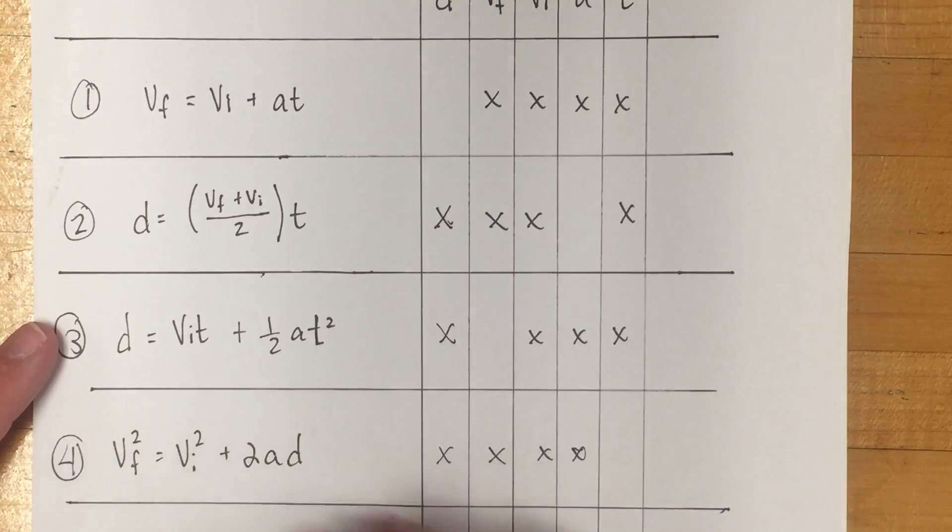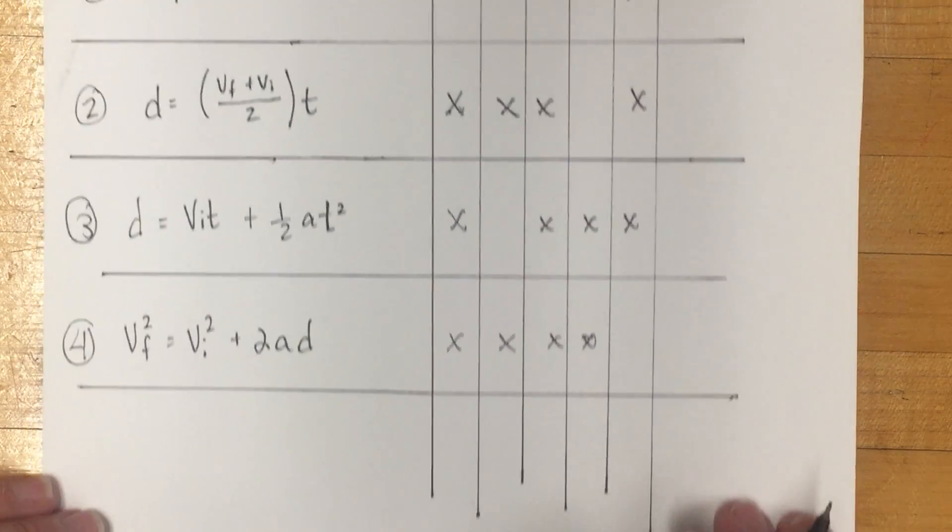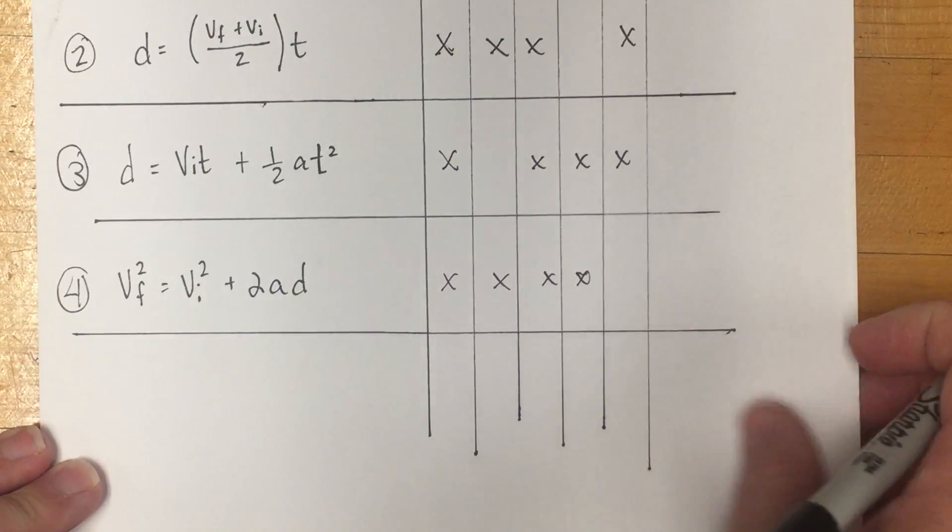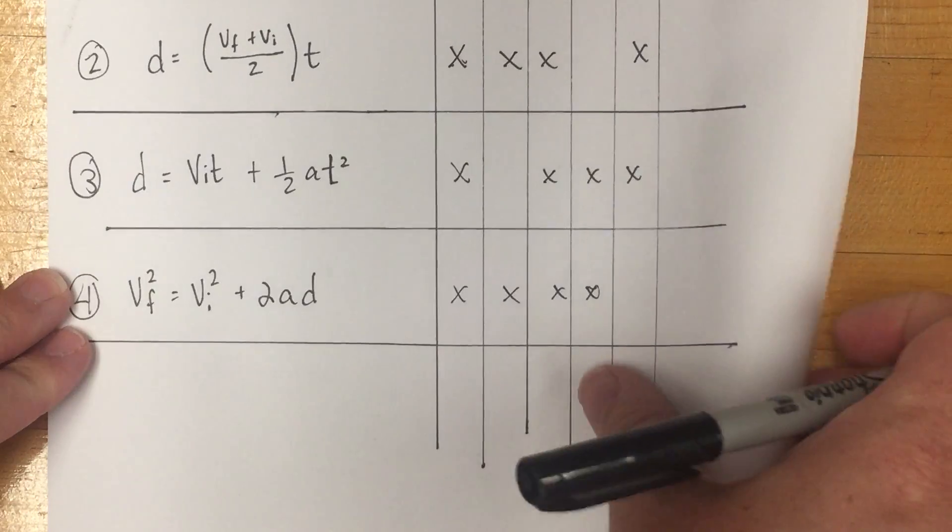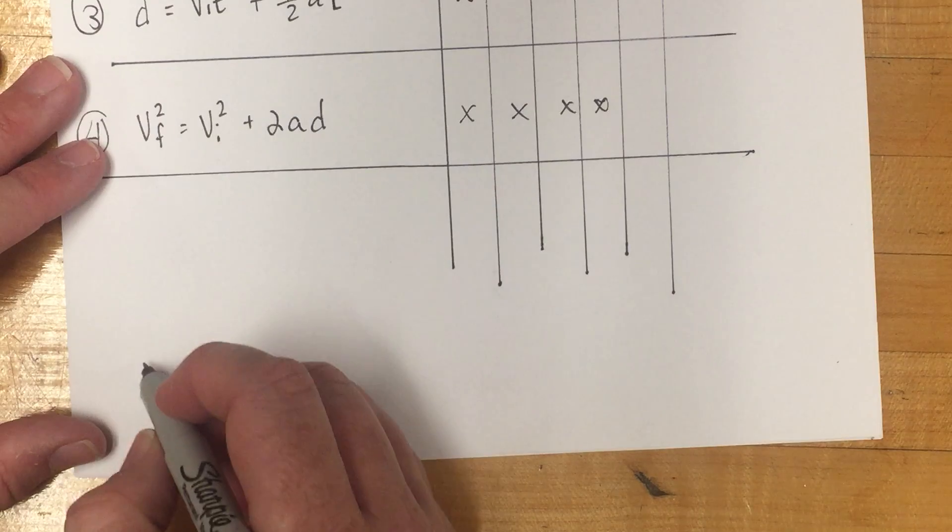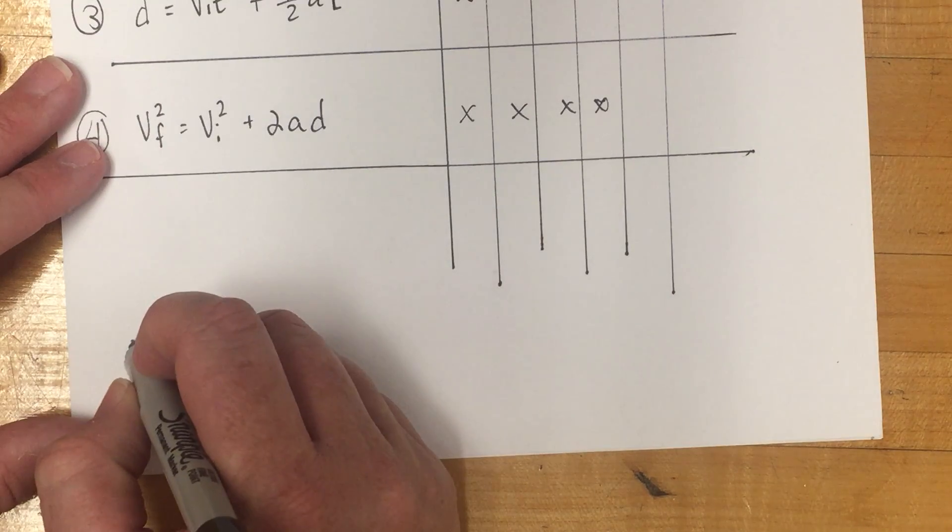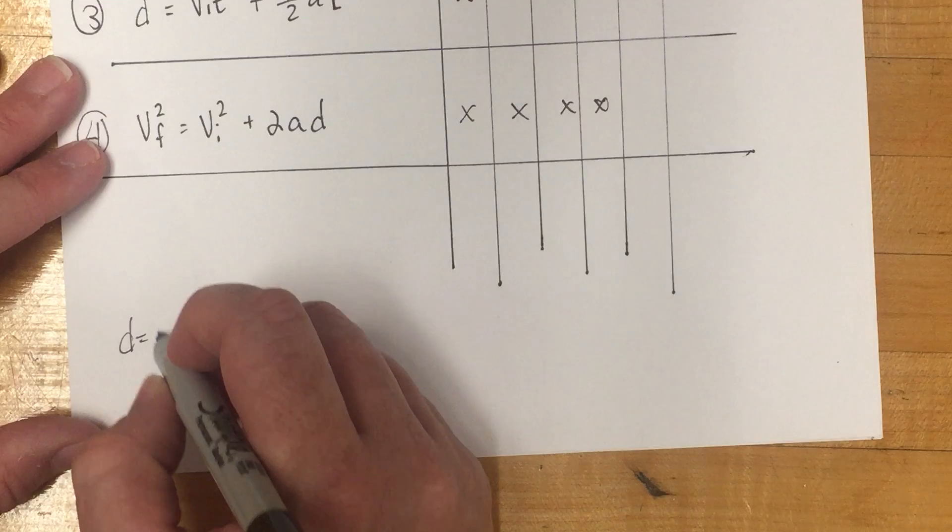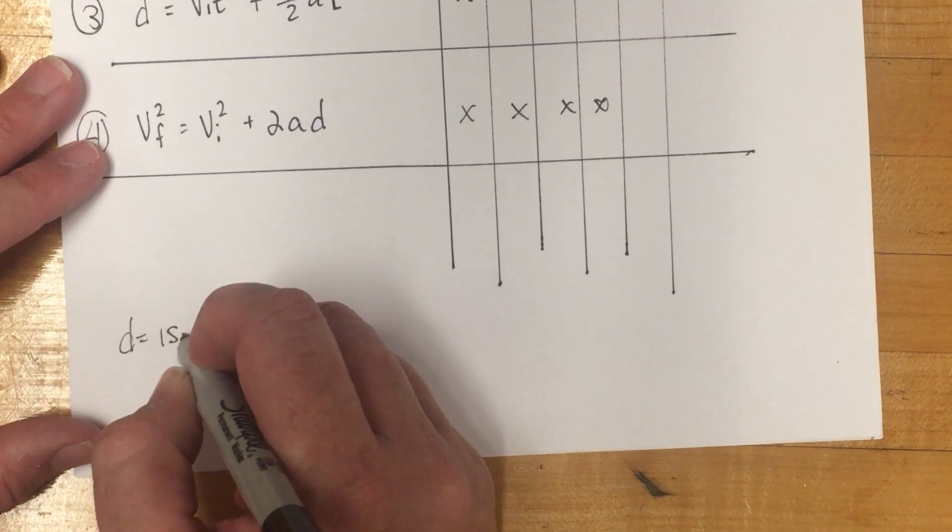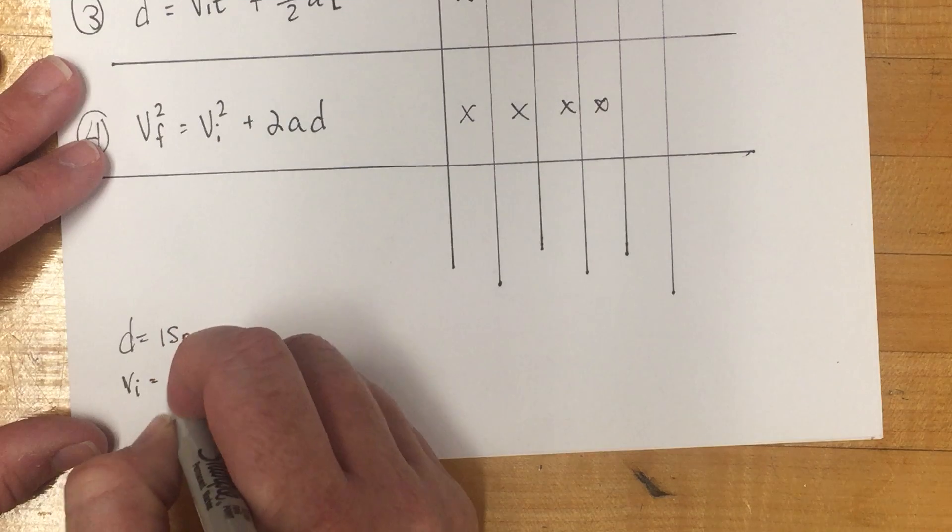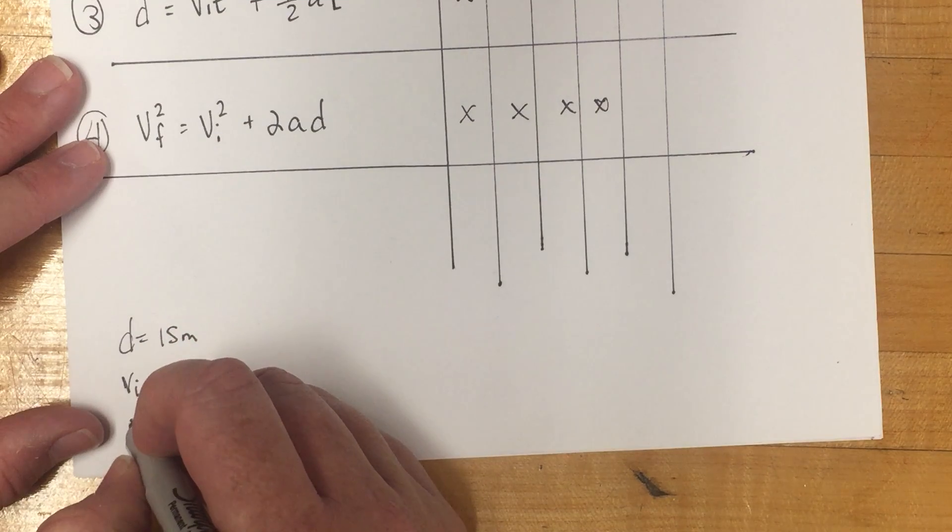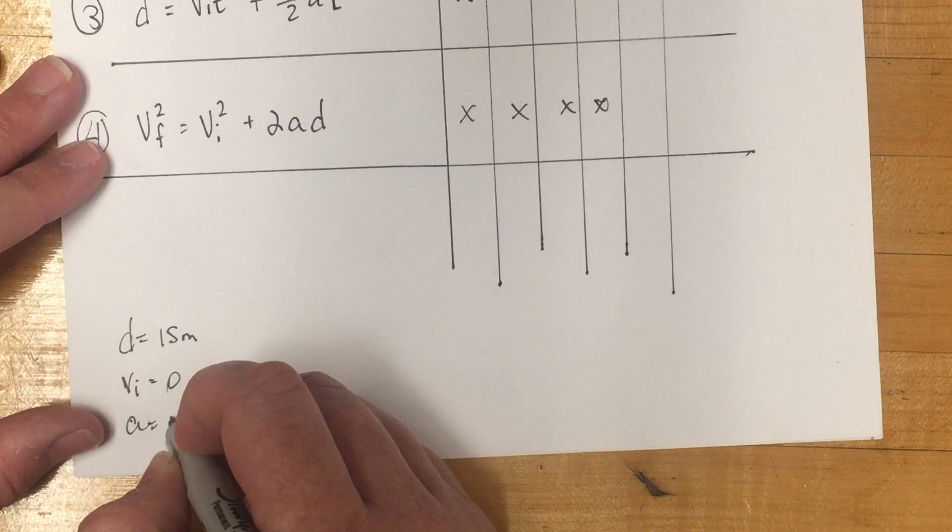So these are the big four equations that you're working with. When you're working with the equations, you want to make sure that you get your variables down to start. Let's say you have some problem and in that problem it says your d is 15 meters, your vi is zero, and your a is 1.2 meters per second squared.